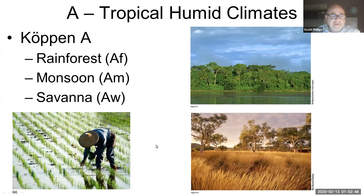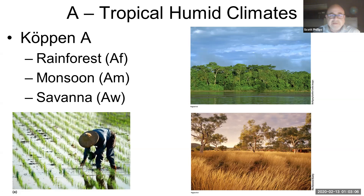This is what they look like. This is a tropical rainforest climate, extremely wet, with a dense, lush vegetation. Savannas, which are drier, are a little bit more of an open landscape. And monsoons are kind of like both, but one thing about monsoons is that they are really important for food production, because much of the rice in the world is grown in monsoon areas.